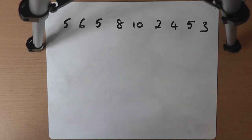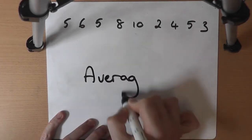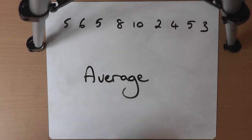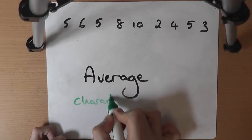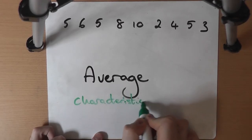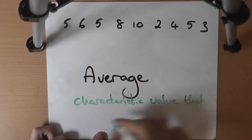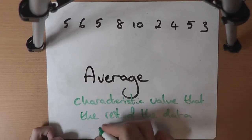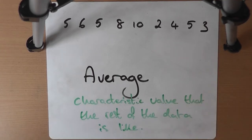The catch-all term for a characteristic value is an average. An average is a characteristic value — usually a single number that the rest of the data is like. A number or selection of numbers that describes the rest of the data, so the rest of it is very much like this.